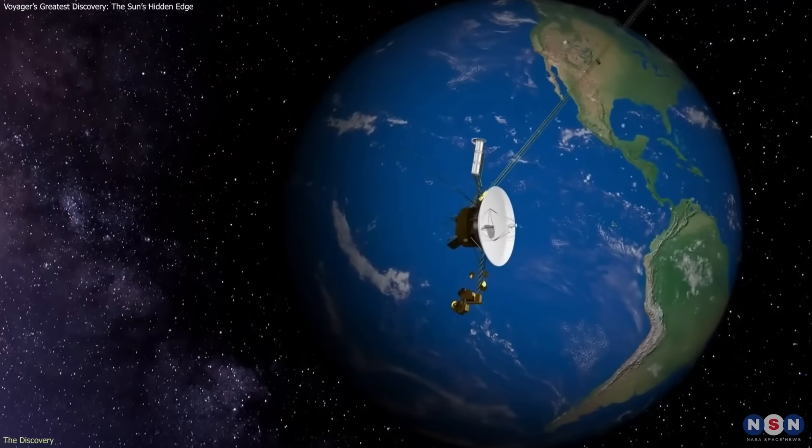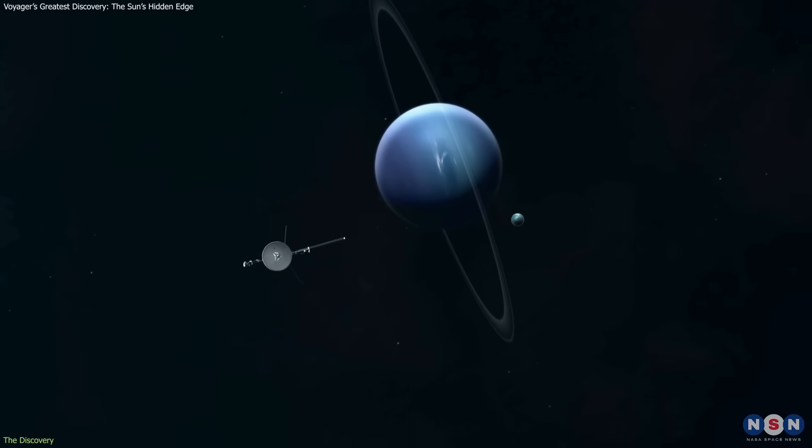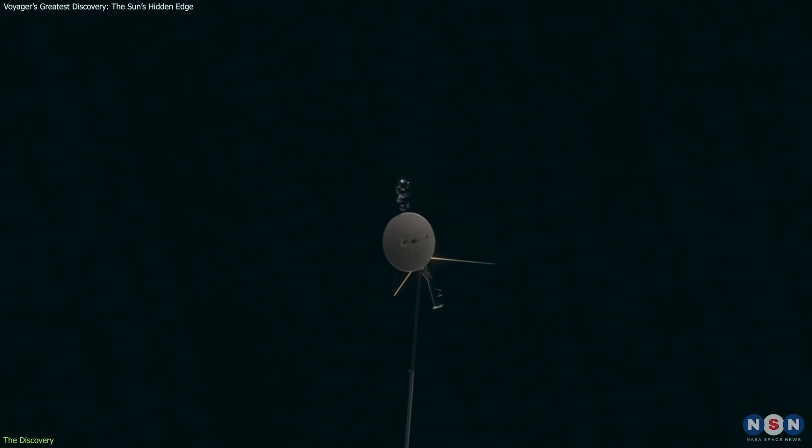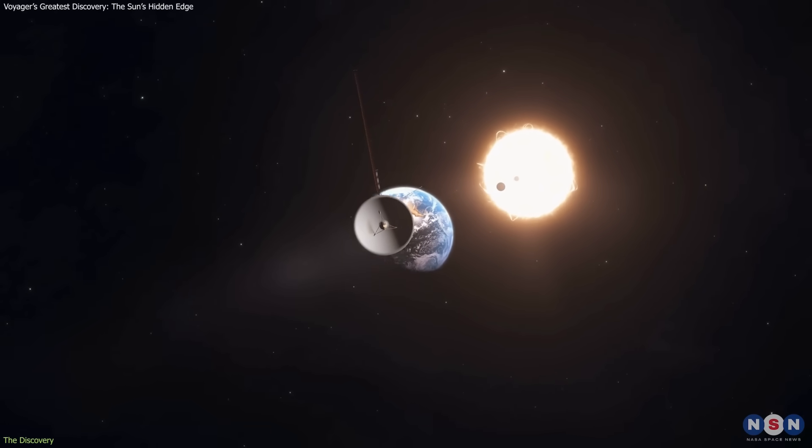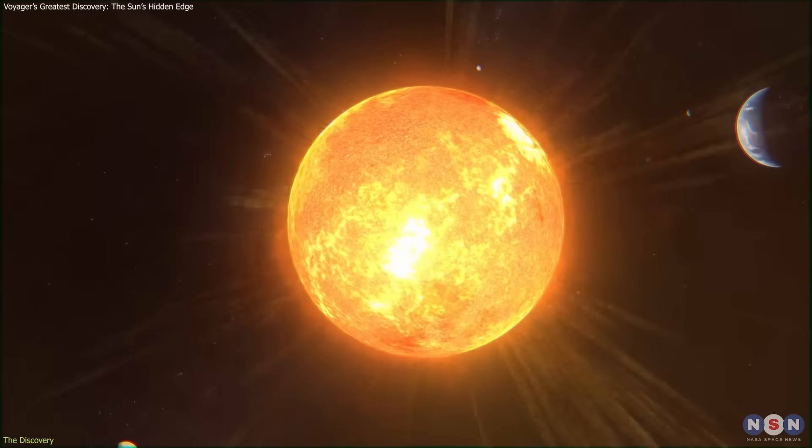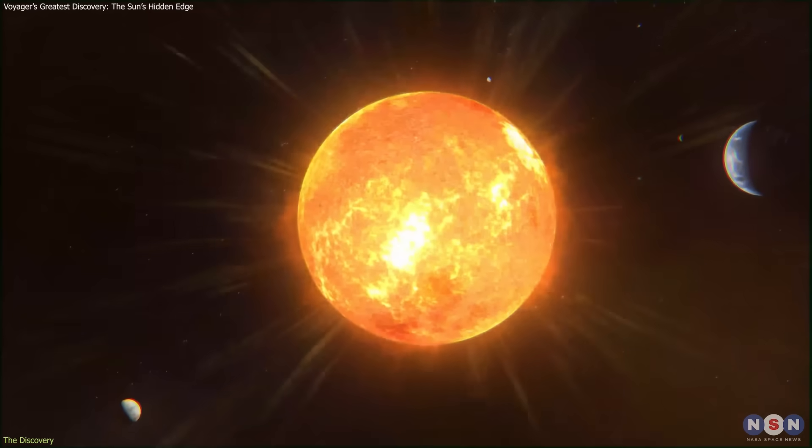When Voyager 1 and 2 left Earth, their mission was to study the outer planets. After completing that goal, both continued outward, heading for the unknown region where the Sun's influence ends. As they traveled, the spacecraft measured a steady weakening of the solar wind, the constant stream of charged particles flowing from the Sun.